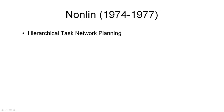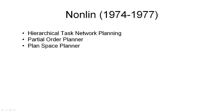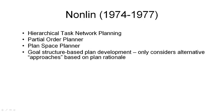In this slide, I'm using the terminology now commonly applied to these techniques. Nonlin was a hierarchical task network planner. It could generate plans in which the activities were not fully ordered — it had been common up until that time for AI planners to generate fully linear plans. Nonlin searches in the space of plan descriptions rather than in the application state space, and uses the goal structure of the plan in considering different alternatives, always looking at approaches based on that plan rationale.